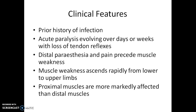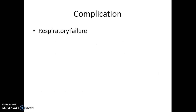Muscle weakness ascends rapidly from lower to upper limbs — the weakness initially starts in the lower limbs and then progresses to the upper limbs. The proximal muscles are more commonly affected than distal muscles; for instance, the flexors of the hip are first affected, then the flexors of the knee.